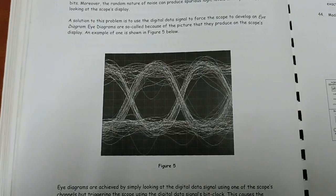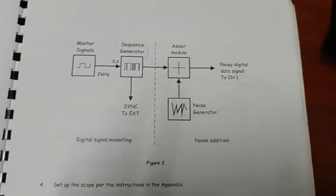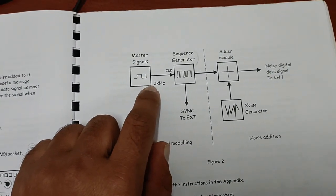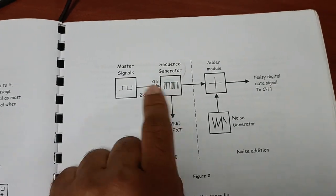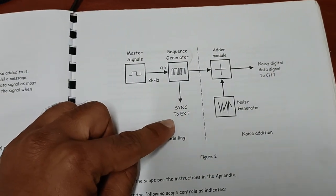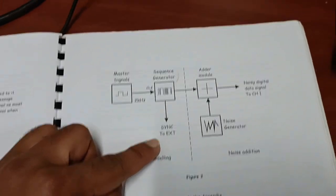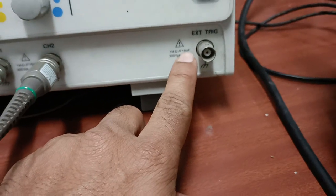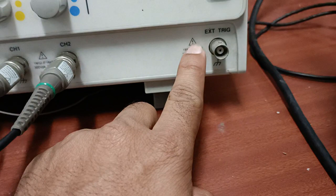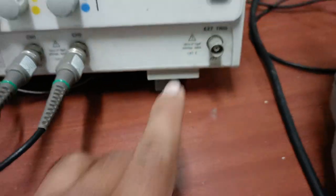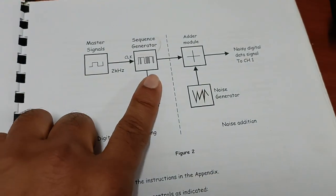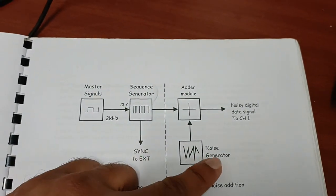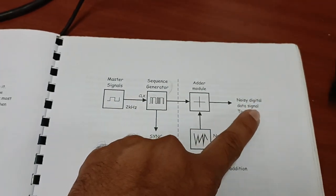Let's look at the block diagram of this experiment. There is a master signal from which a 2 kHz digital signal is taken. Then there is a sequence generator in which the master signal input goes. There is also synchronization to an external trigger, which is used in the CRO, but it is not required in many cases. Then there is an adder module — you already know what an adder is. Then there is a noise generator and the noisy digital signal output.